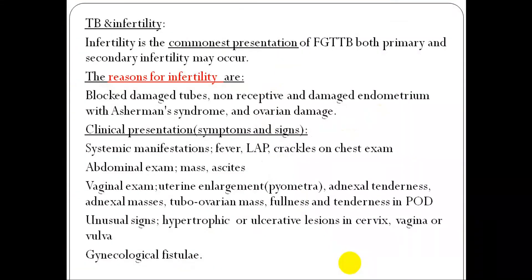TB and infertility: as mentioned, infertility is the common presentation, and both primary and secondary infertility may occur. The reasons for infertility are blocked or damaged tubes, a non-receptive and damaged endometrium, Asherman's syndrome of the uterus, and ovarian damage.